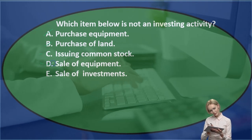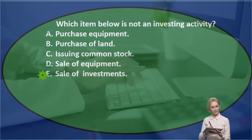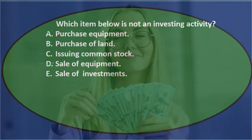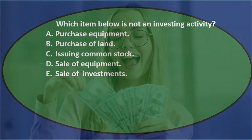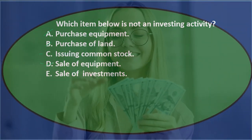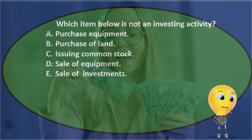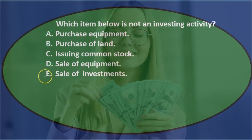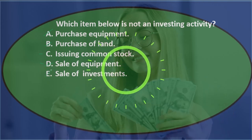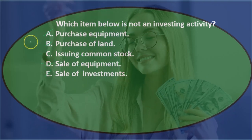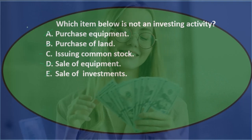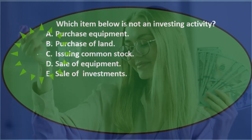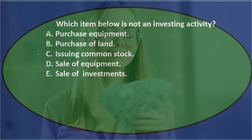E. Sale of investments — we're selling investments and getting cash. This seems straightforward as an investing activity since we're selling an investment, likely stocks and bonds. So it's not E. That leaves C as the answer: which item below is not an investing activity? C. Issuing common stock — that's a financing activity.